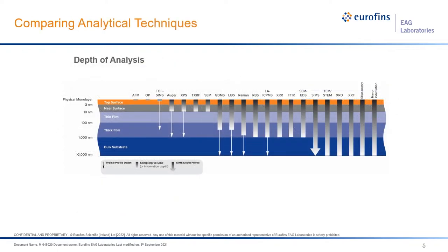X and Y sizing isn't the only dimension to consider in surface analysis. We can compare techniques by their depth of penetration. On the left are the very surface-sensitive techniques — AFM, time-of-flight SIMS, Auger, and XPS — which look at the first few atomic layers down to about 10 nanometers. Raman, RBS, and XRR look deeper still, and almost-bulk techniques include XRD, XRF, TEM cross-section, and SIMS depth profiles. SEM-EDX sits at the near surface down to about 1,000 nanometers (one micron), but that depth is variable and we can use that variability to our advantage.